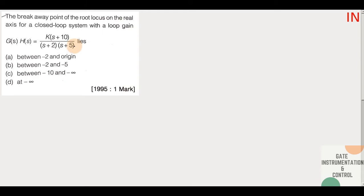Hello and welcome. Here we have a question: what is the break-away point of the root locus on the real axis for a closed loop system with loop gain G(s)·H(s) equal to K multiplied with (s+10), divided by (s+2) multiplied with (s+5)? Between which of the following points does it lie?